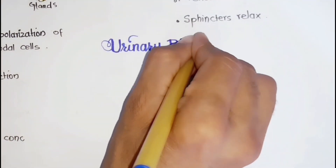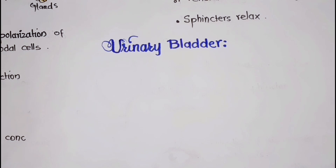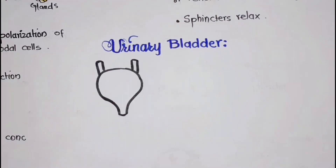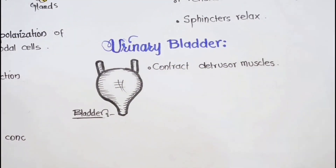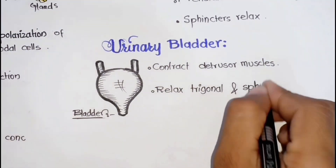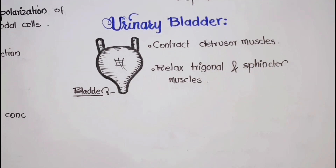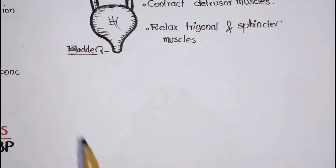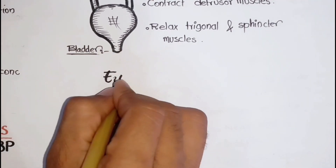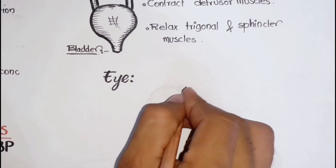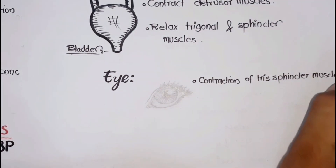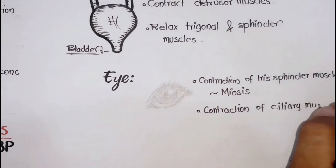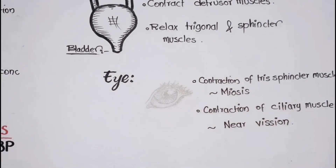The main target of cholinergic agonists in the urinary system is the bladder. Muscarinic agonists stimulate the detrusor muscle and relax the trigonal and sphincter muscles of the bladder, thus promoting the voiding of urine. Cholinergic agonists in the eye cause contraction of the iris sphincter muscles causing miosis, and contraction of the ciliary muscle causes accommodation of the lens for near vision. Both effects decrease the intraocular pressure.